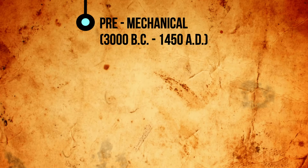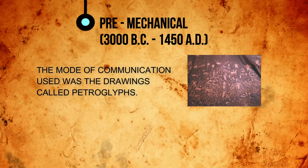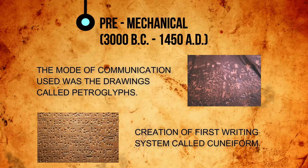Pre-mechanical can be dated back between 3000 BC and 1450 AD. During this time, humans used drawings called petroglyphs to communicate with each other. They were drawn on rocks and wet clays to create a record. This eventually led to the creation of the first writing system known as cuneiform.